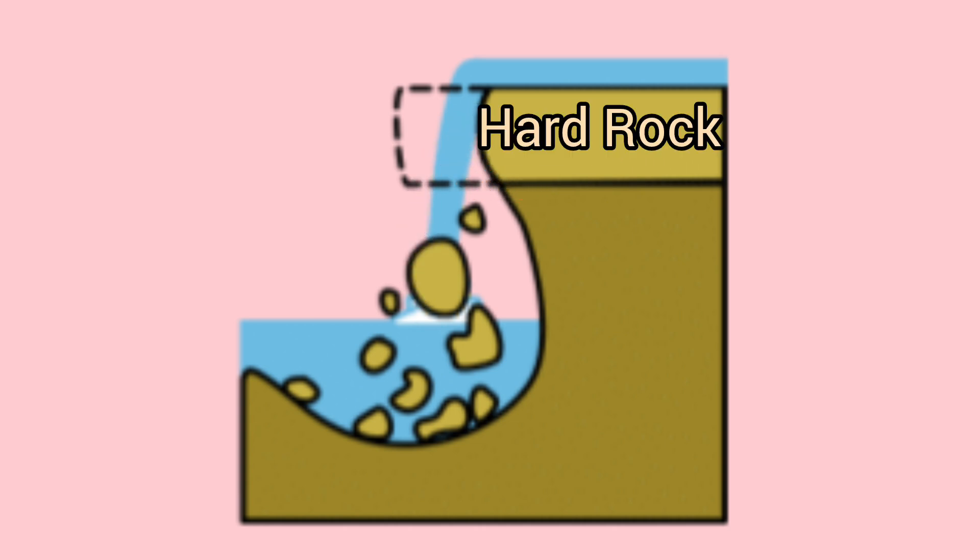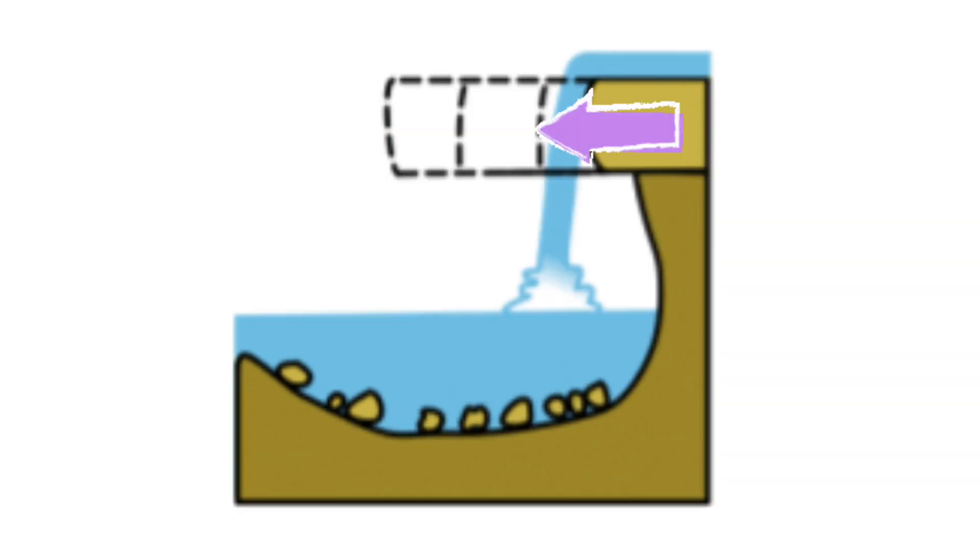The hard rock overhang above the plunge pool collapses as its weight is no longer supported. Erosion continues and the waterfall retreats upstream.